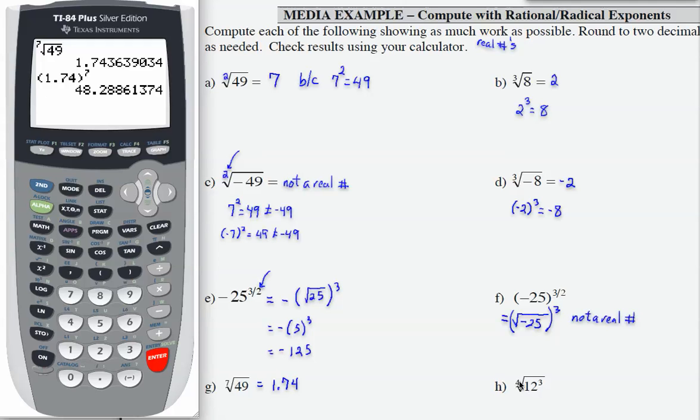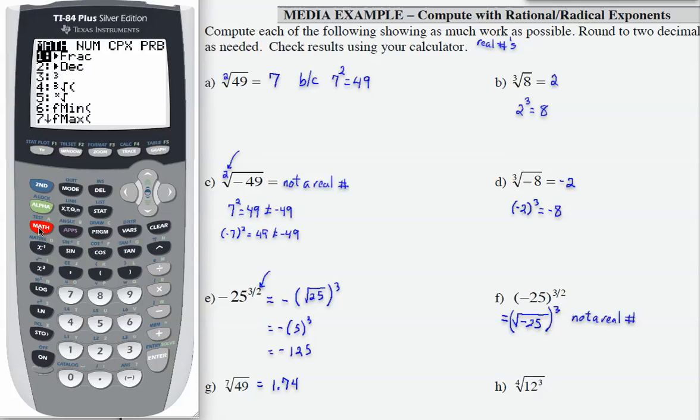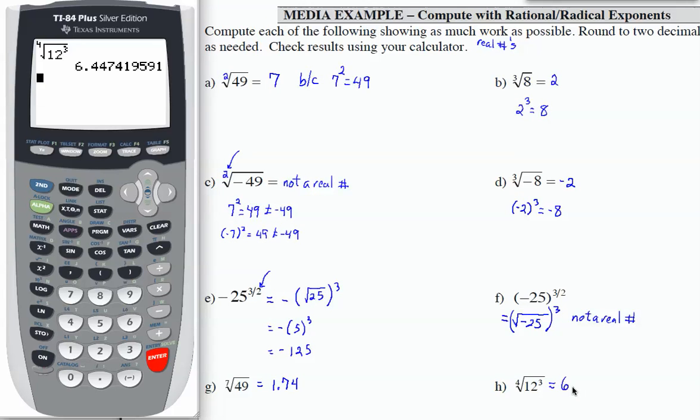Let's check the last one, the fourth root of 12 cubed. So let's see on our calculator. Again I'm going to clear this out. We need a fourth root, and then under math it's number 5. Then I need a 12. Then I need an exponent of 3. Once again I'm going to press my arrow to move, and I have to press it twice to move my cursor outside of my radical. Then I'm going to press enter, and that's going to be approximately 6.45 as a final result.